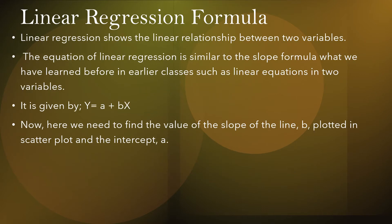The linear regression formula shows the relationship between two variables. The equation of linear regression is similar to the slope formula learned in earlier classes — linear equations in two variables. It is given by y = a + bx. We need to find the value of the slope b and intercept a plotted in the scatter plot.